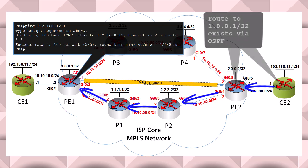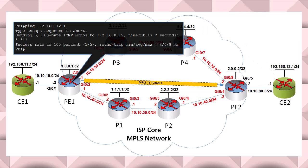Now if we wanted to create an LSP tunnel for the return journey, we would have to configure another LSP tunnel at PE2, which would act as the head-end router for that tunnel, and it would have to be created towards the tail-end router, which is PE1. But we won't do that now.